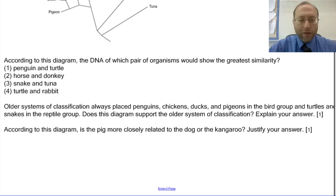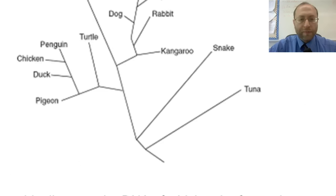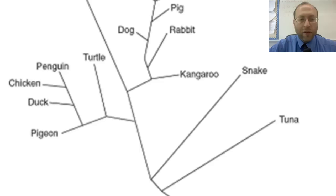Next question: older systems of classifications always place penguins, chickens, ducks, and pigeons in bird group, and turtles and snakes in the reptile group. Does this diagram support the older system of classification? Explain your answer. Looking at this, I would say no, and the reason why is because you see the snake, which is a reptile, is off on its own branch, and that branch is separate from the turtle, which is off on the same branch as all of the birds.